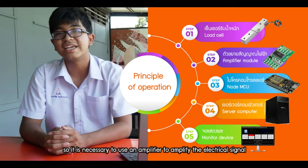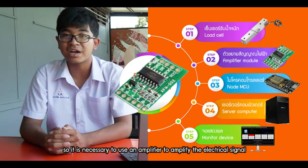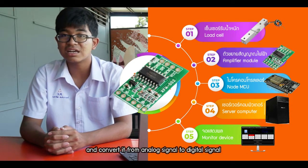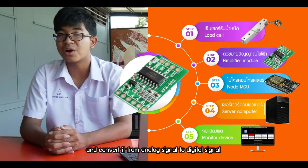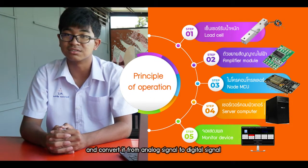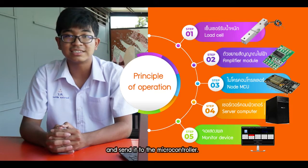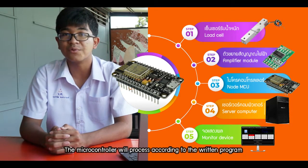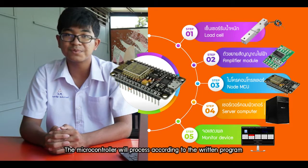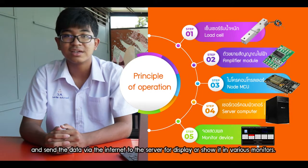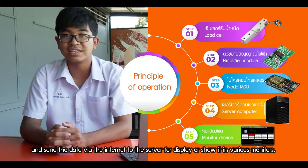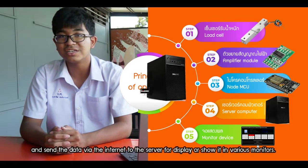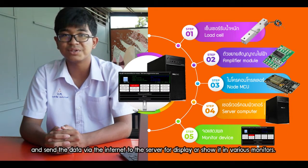So it is necessary to use an amplifier to amplify the electrical signal and convert it from an analog signal to a digital signal, then send it to the microcontroller. The microcontroller will process the data according to the written program and send it via the internet to the server for display, or show it on various monitors.